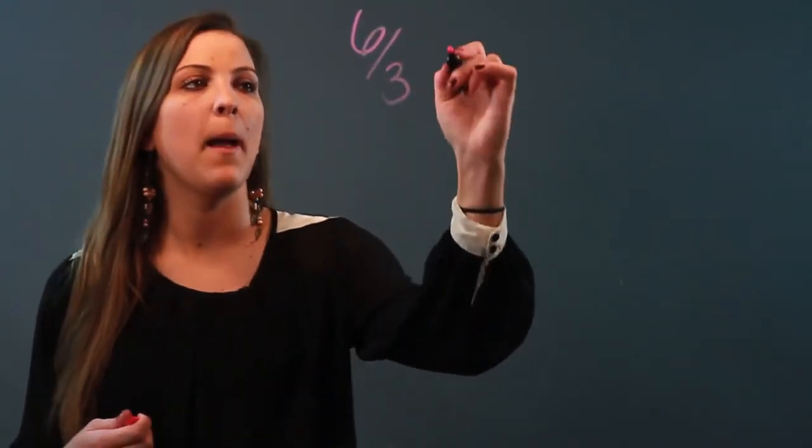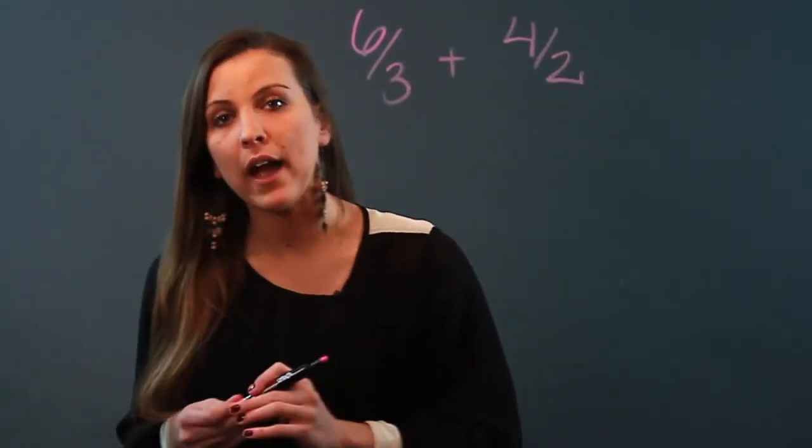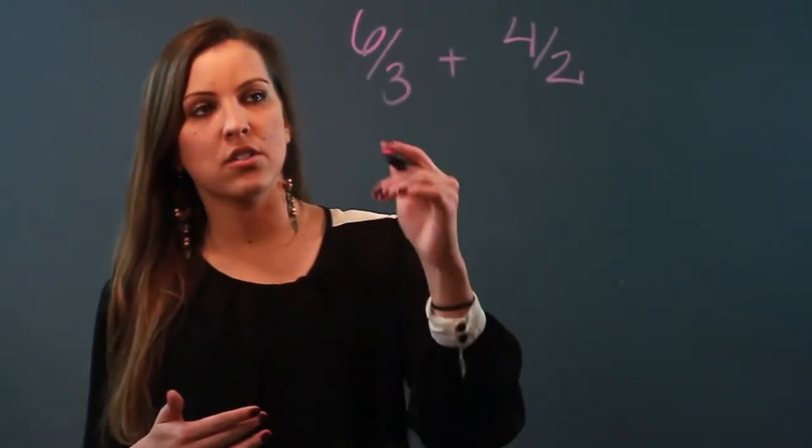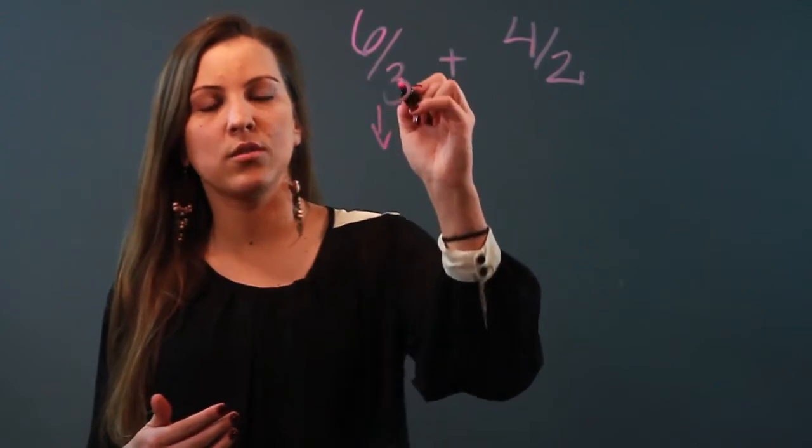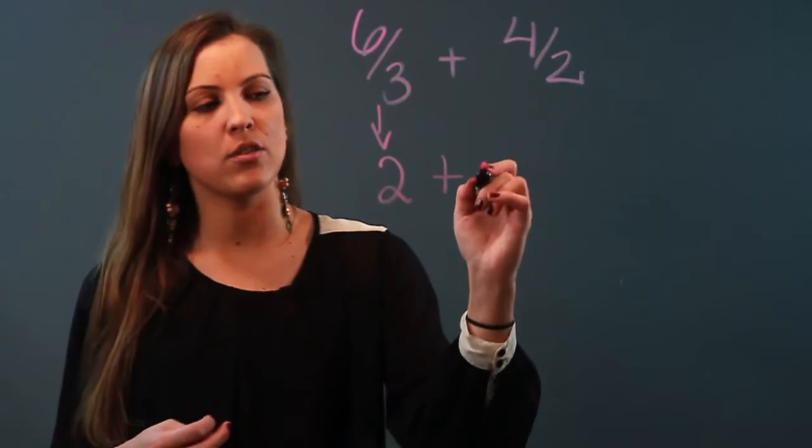So the only way I would represent an integer as a fraction is, for example, if you had 6 over 3 plus 4 over 2. So at first glance, these might look like fractions, but they're actually integers because I can go ahead and divide and do 6 divided by 3 to get 2, plus I can divide 4 divided by 2 to get 2.